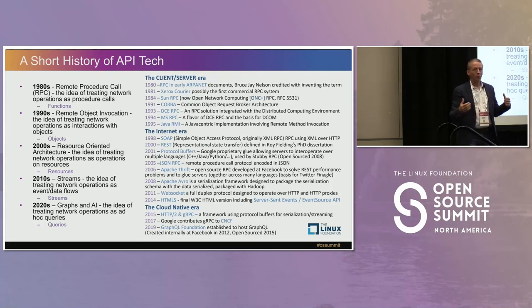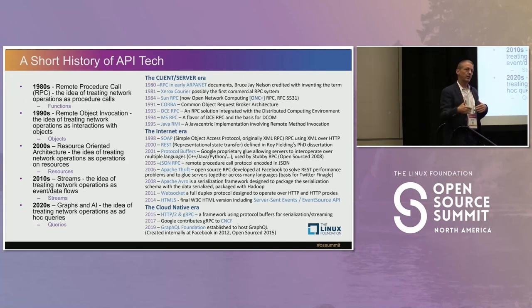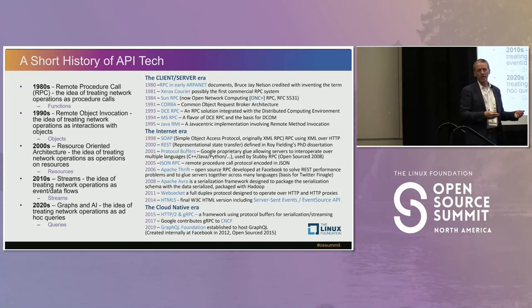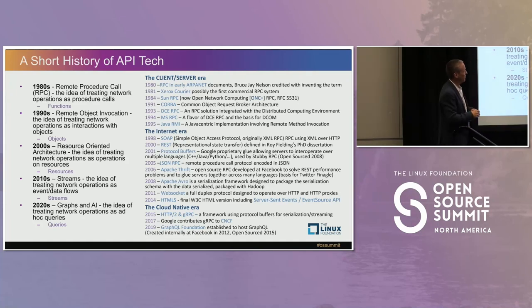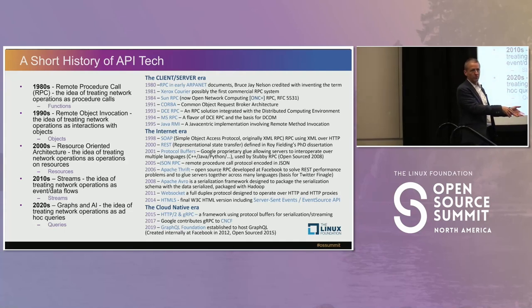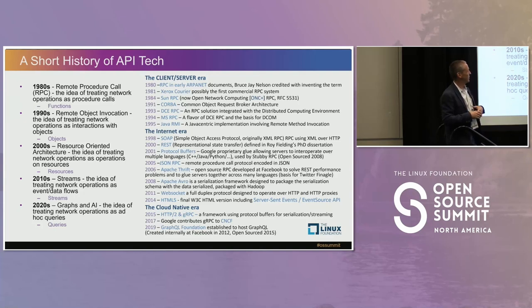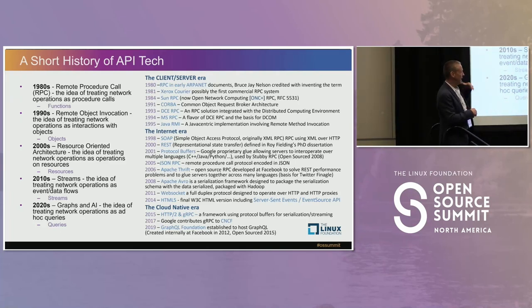People want to do API stuff in their back-end where lots more services communicate with each other, so things need to happen a lot faster. They need something that's not text-oriented — something binary, something that can serialize and deserialize really quickly, with a more aggressive API contract approach. That's where we get protocol buffers, internal at Google. Facebook hired smart people from Google, and you get Apache Thrift — Facebook open-sourced it right away. Protocol buffers got open-sourced shortly after, and then Apache Avro shows up. WebSocket shows up to provide better streaming, then some HTML5 stuff and server-sent events.